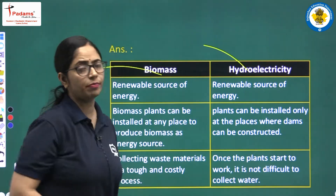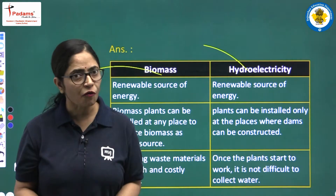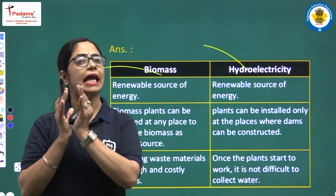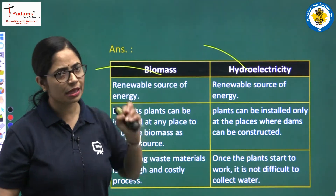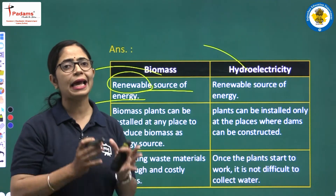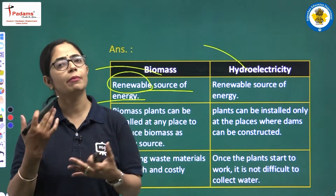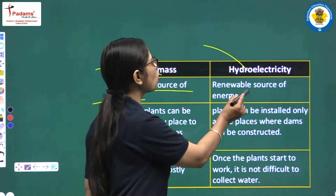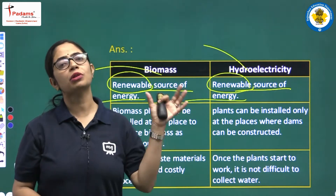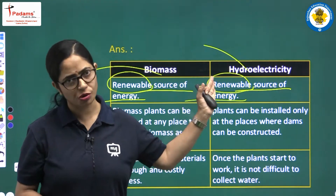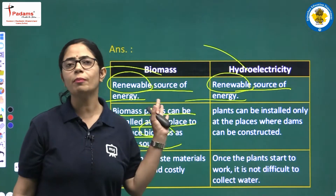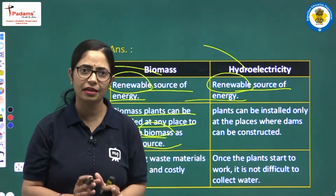Question number 5: Differentiate between biomass and hydroelectricity as sources of energy. Biomass — using plant or animal waste to form biogas — gives us energy. Hydroelectricity uses the kinetic energy of running water to produce electricity. Both biomass and hydroelectricity are renewable sources of energy; river water can be collected and its kinetic energy utilized again.